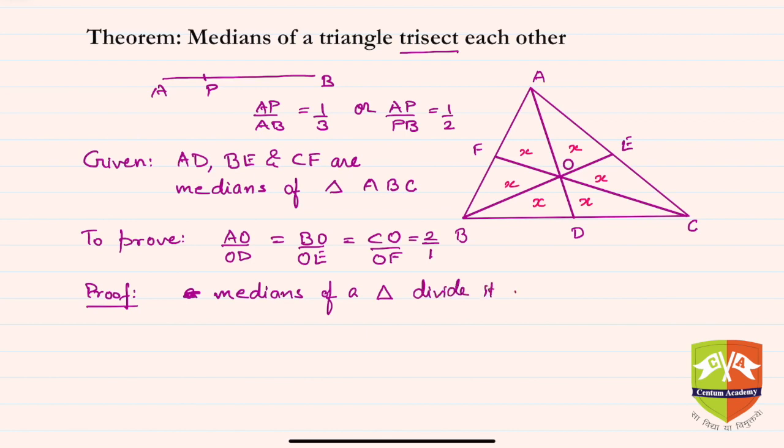...it into six parts or six triangles, in this case six parts of equal area. We just proved it in the previous session. You can always go back and check that session. Medians of a triangle divide it into six parts of equal area.